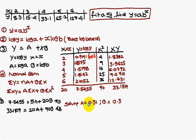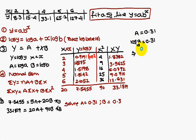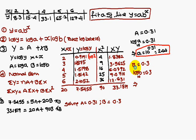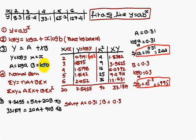Solving gives capital A = 0.31 and capital B = 0.3. Since we need small a and small b: capital A = log(a) base 10 = 0.31, so small a = 10^0.31 = 2.4. Capital B = log(b) base 10 = 0.3, so small b = 10^0.3 = 1.095.